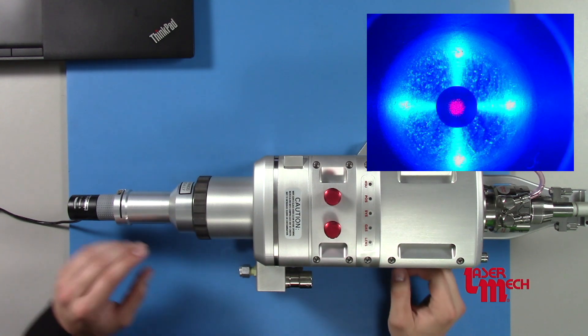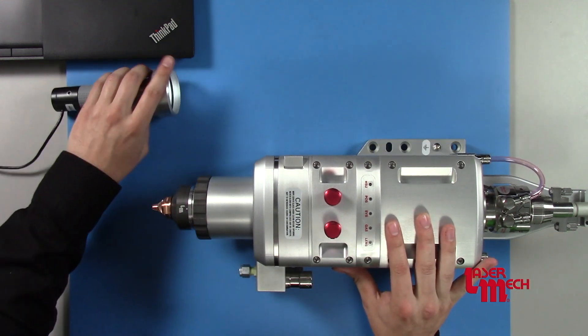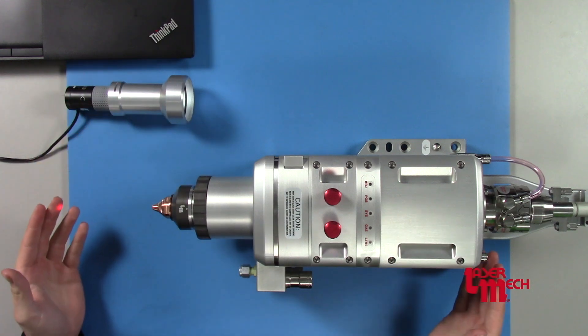There's nothing else to it. You can remove your camera from the head, place it to the side, and your head is centered and ready to cut.